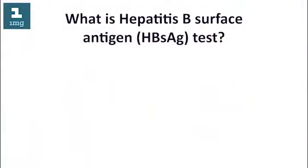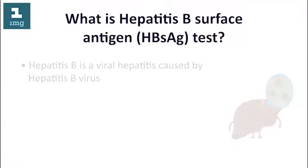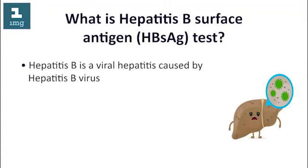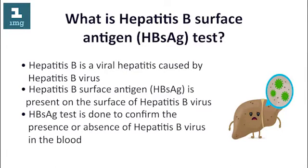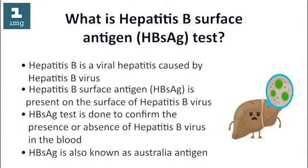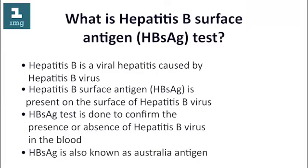What is the hepatitis B surface antigen test? Hepatitis B is a viral hepatitis caused by the hepatitis B virus. Hepatitis B surface antigen is present on the surface of the hepatitis B virus. The HBsAg test is done to confirm the presence or absence of hepatitis B virus in the blood. HBsAg is also known as the Australia antigen.